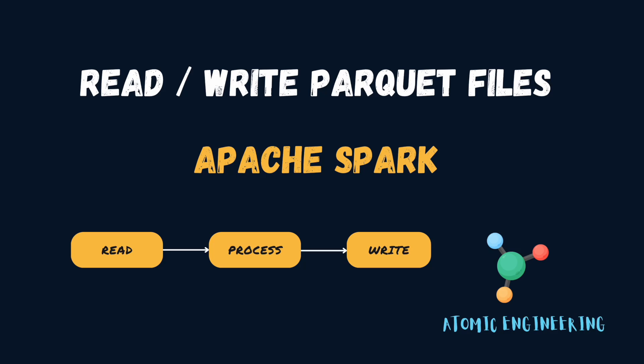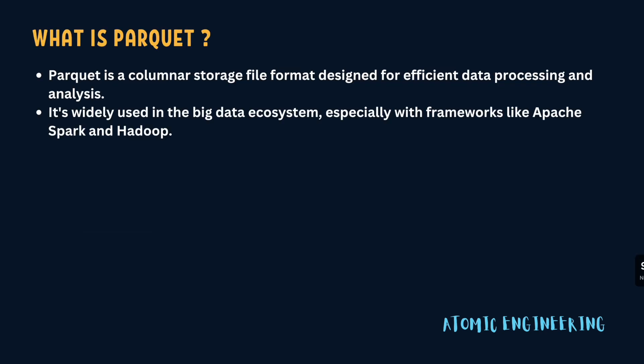Hi everyone, welcome back to our Spark tutorial series. In this video we will dive into how to efficiently process Parquet files using Apache Spark. If you don't know about the Parquet file format, Parquet is a columnar storage format, meaning data is stored column-wise rather than row-wise. This storage organization aligns well with Spark's execution engine, which operates on columns during query processing. By storing related data together, Parquet minimizes I/O operations and enhances data locality, leading to improved query performance.